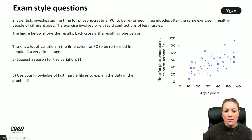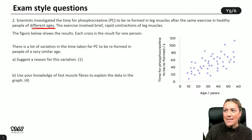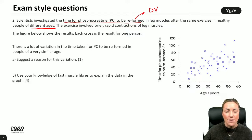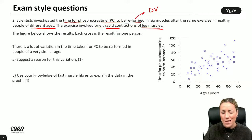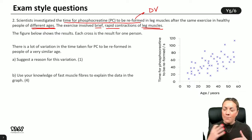Let's look at a more challenging question. Scientists investigated the time for phosphocreatine to be reformed in leg muscles after the same exercise in healthy people of different ages. The independent variable is the age of the person, and they're measuring the time for phosphocreatine to be reformed - that's the dependent variable. The exercise involved brief, rapid contractions of leg muscles, some kind of intense exercise with fast contractions, and they're seeing how long it takes for phosphocreatine to reform.